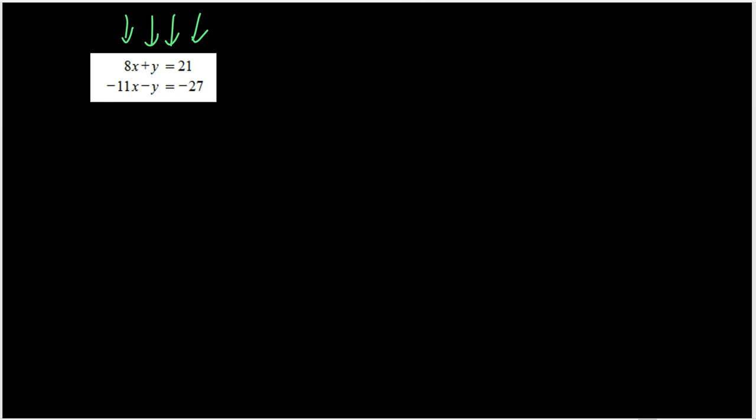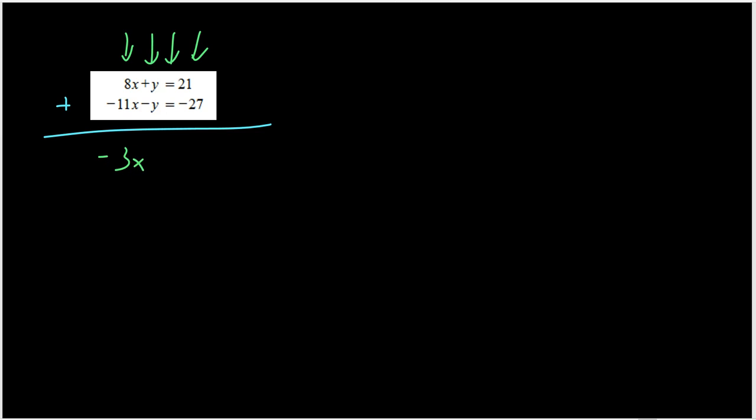So what you're going to do is you're going to add these two equations together, or subtract. Whichever one eliminates one of the variables. So for this one, I am going to add both equations together. And I choose the addition because 1y plus a negative 1y gives me the 0. And that's what I'm looking to happen. So if I add these two up, 8 minus 11 will be a negative 3x. So negative 3x. And just for emphasis, I'm going to put the 0y here. And then 21 plus a negative 27 would be a negative 6. Now be really careful about your signs.